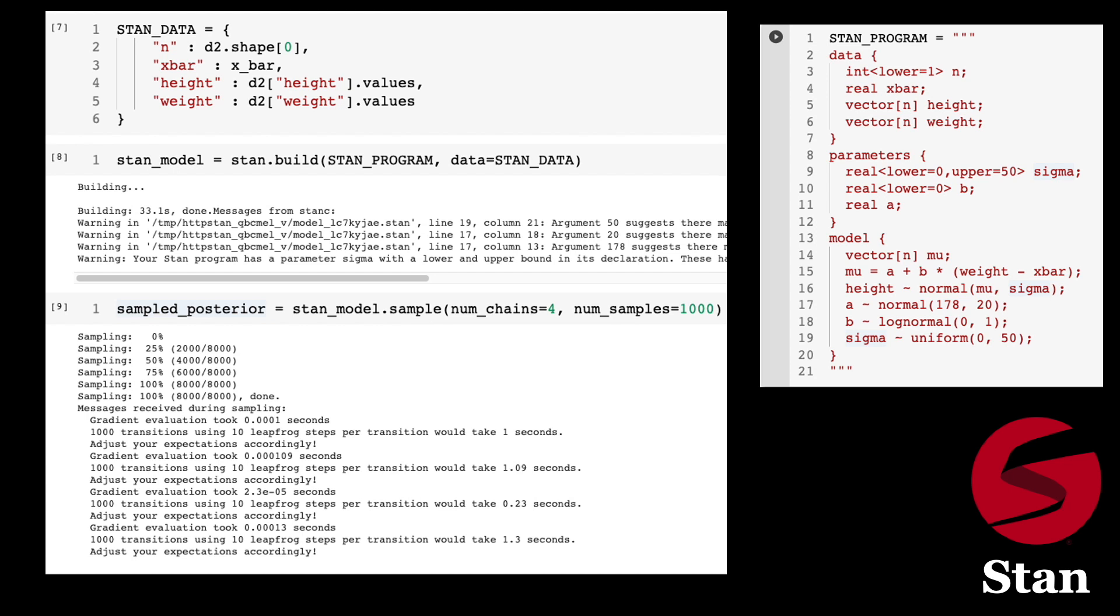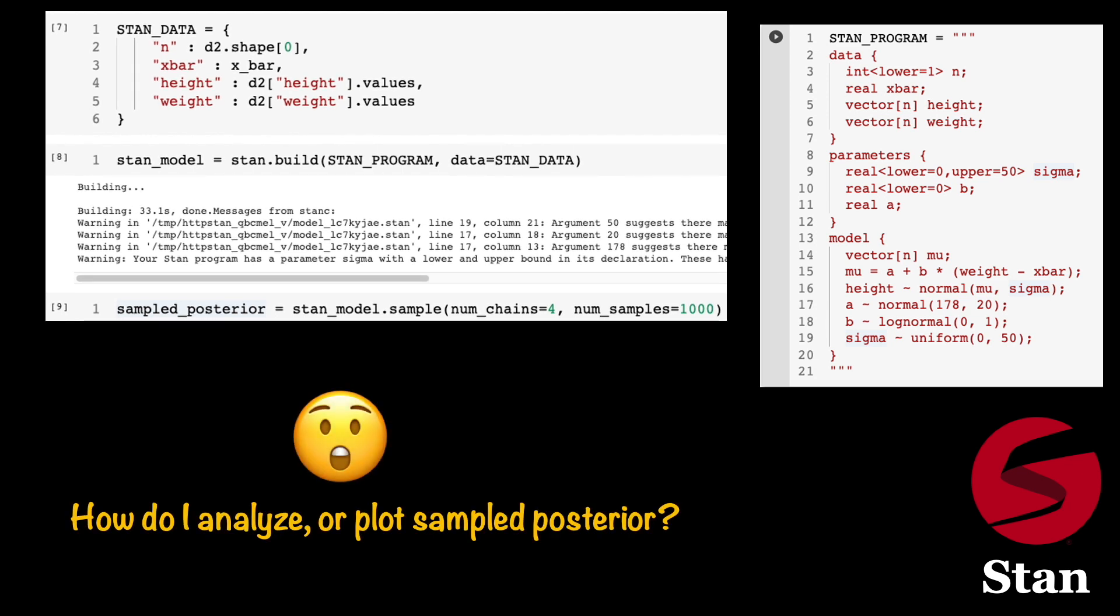And now finally using the API called sample on this model object, we can run the inference algorithm. By default Stan will use the MCMC algorithms. It will also determine some tuning parameters. Here we are only suggesting it to simulate four Markov chains and the samples per chain should be 1000. Behind the scene, Stan's inference algorithm can run on multiple threads and do the runtime adaptations. We will discuss these sort of things in the next few tutorials. For now, just treat this as a black box. For this model, sampling the posterior distribution of various unknown parameters took only few seconds, I think around four seconds, and all the information is stored in the sampled underscore posterior Python object.